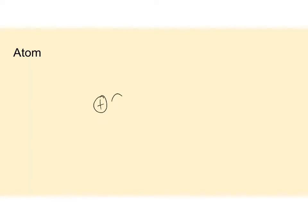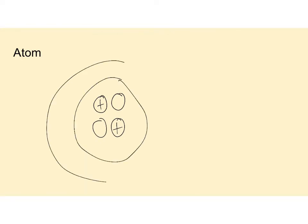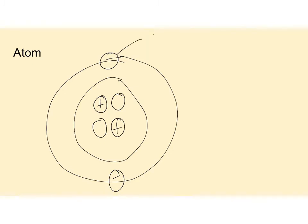We're just going to quickly go back through the atom, like we've just been through in the starter activity. You should now be able to label these without much help. I suggest you pause the screen and try to label them again just to get yourself practicing. So we've got electrons - they are negative and they are in the shells.